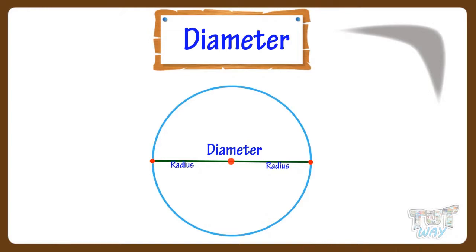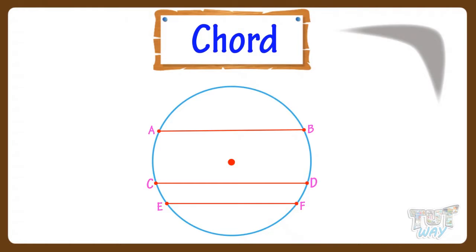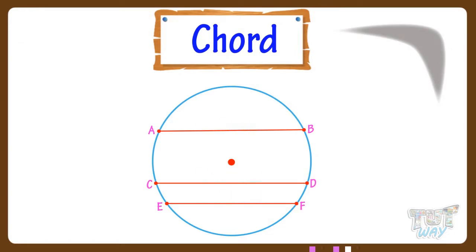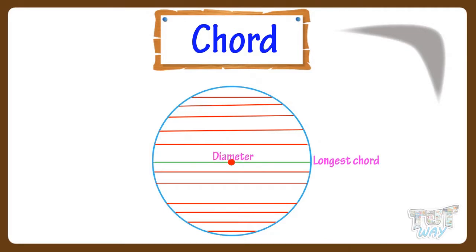Now let's learn what is a chord. A straight line whose both end points lie on the circle is called the chord of a circle. Here, A, B, C, D, E, F are all chords of this circle. We can make any number of chords. The longest chord is the chord that passes through the center of a circle — that is, the diameter. The diameter is the longest chord of the circle.